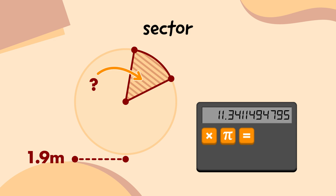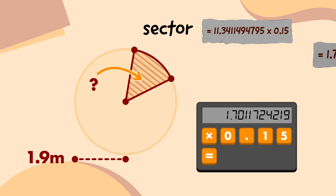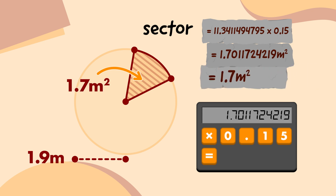Remember, this part of the circle is 0.15 times as big as the whole circle. So I'm going to multiply that by the area. I'll press the multiply button, type 0.15, and press the equals button, which gives me 1.7011724219. That means this sector of the emblem circle is 1.70 square metres.